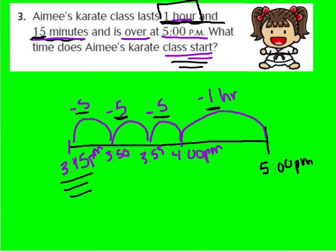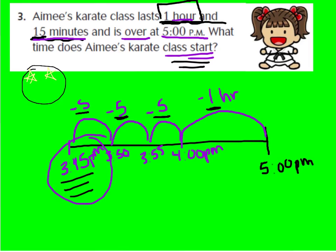That makes sense because I have 5, 10, 15 minutes plus another hour — that's how long her class lasted, 1 hour and 15 minutes. So her start time was 3:45 p.m. Next to number 3, I want you to draw a happy face with star eyes — we can even make him have star sunglasses. Make sure you have that next to number 3: a happy face with star sunglasses.